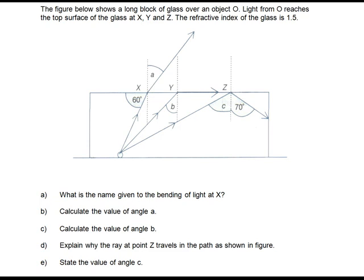In this question, it is given that the light source over here is giving out three rays. These three rays hit points X, Y, and Z respectively, and they are travelling from a denser towards a less dense medium. It is also given that the refractive index of the glass is 1.5.